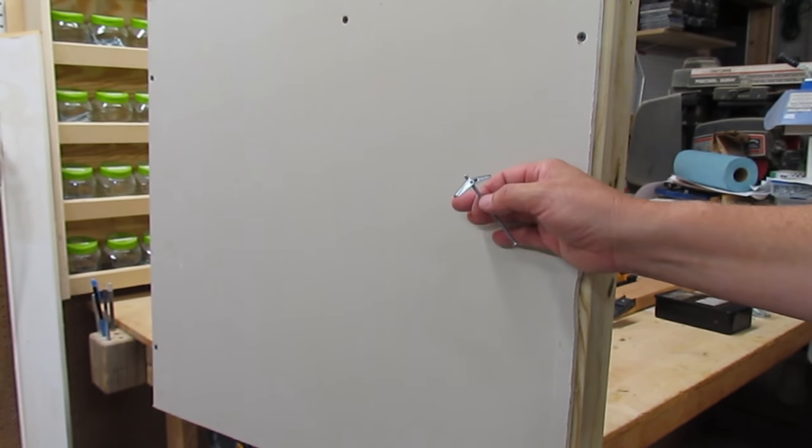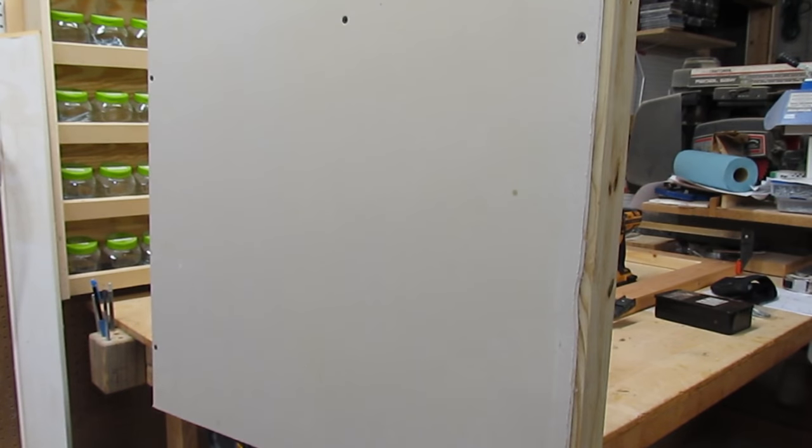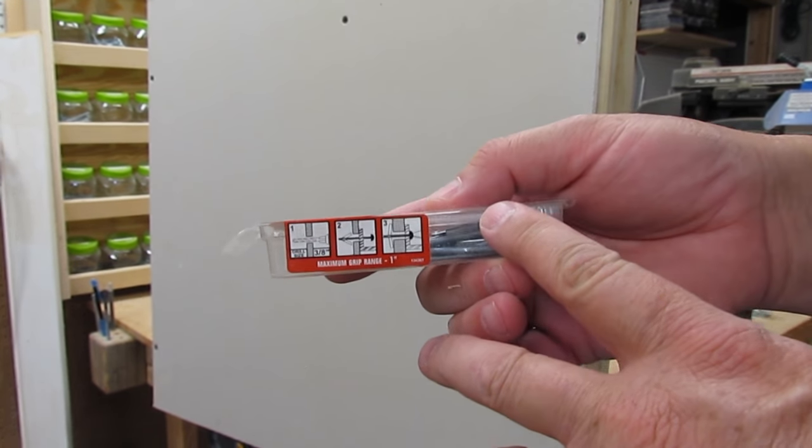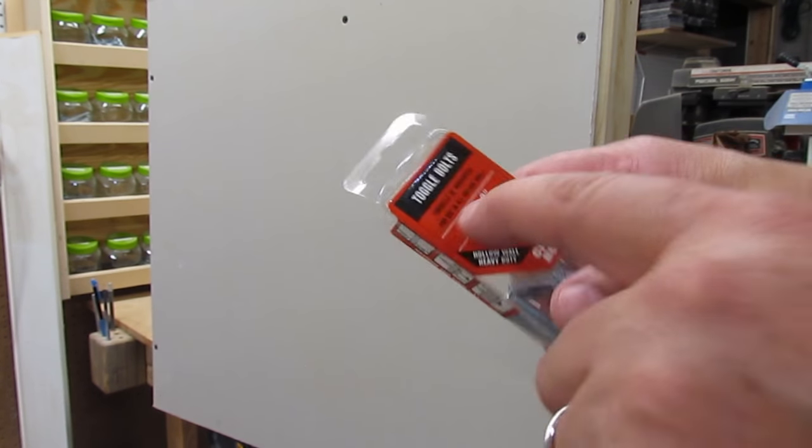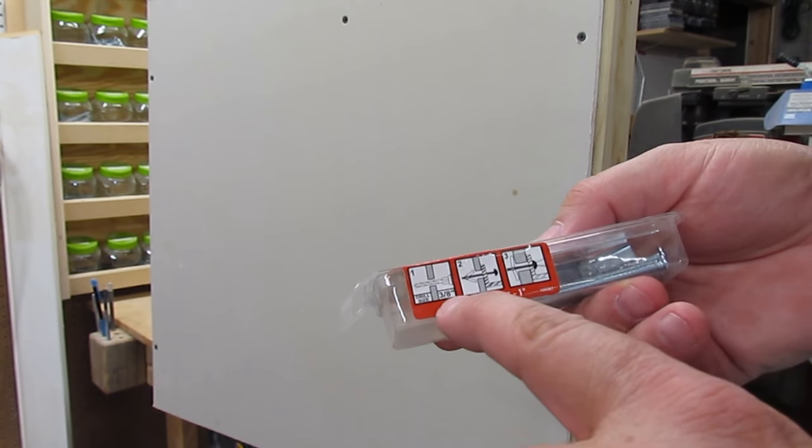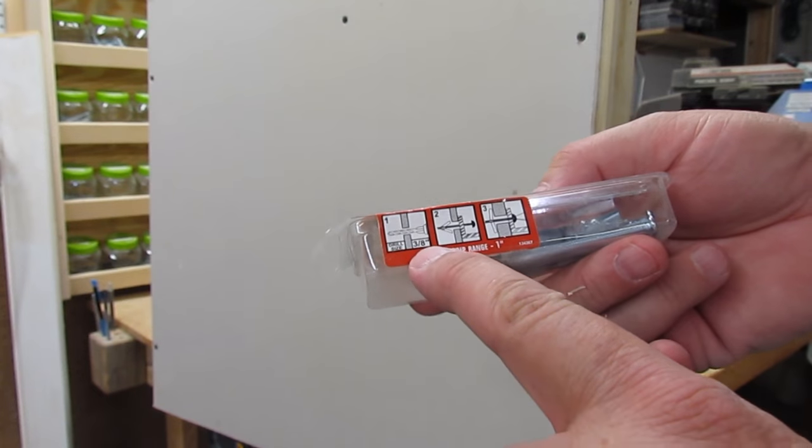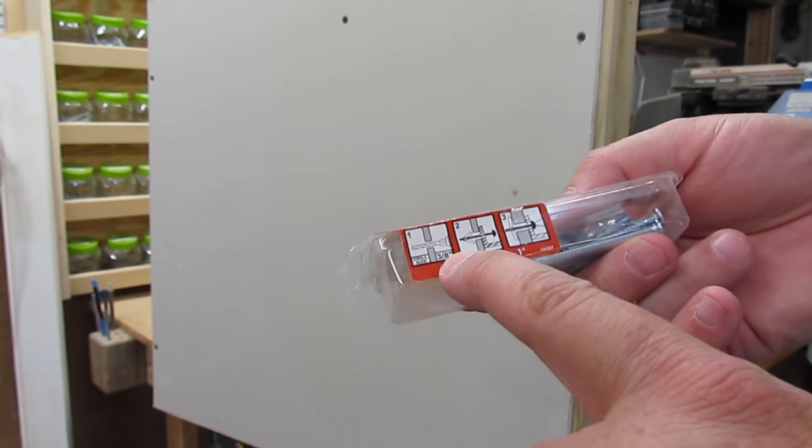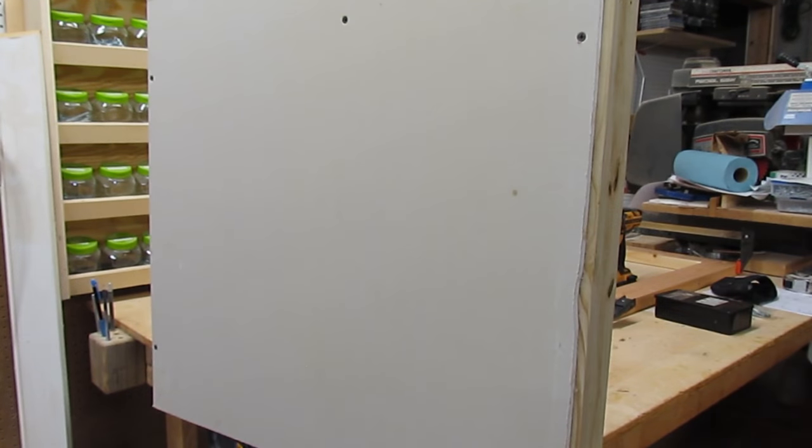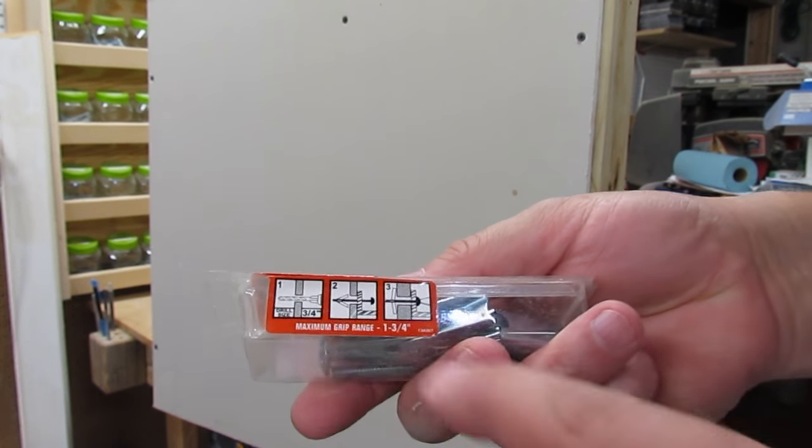All right, next tip. On most toggle bolts available in the US, there will be some information either on the front or on the side to tell you what size drill bit you need. For 1/8 inch toggles you need to drill a 3/8 hole, 3/16 toggles you need to drill a 5/8 hole, and for 1/4 inch toggles you need to drill a 3/4 hole.